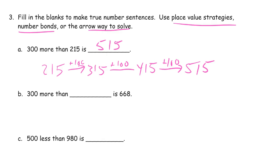300 more than 668. If you wanted to use number bonds, you would do this. Think of this as 600 and then 68. And now you're adding 300 plus 600. 968.